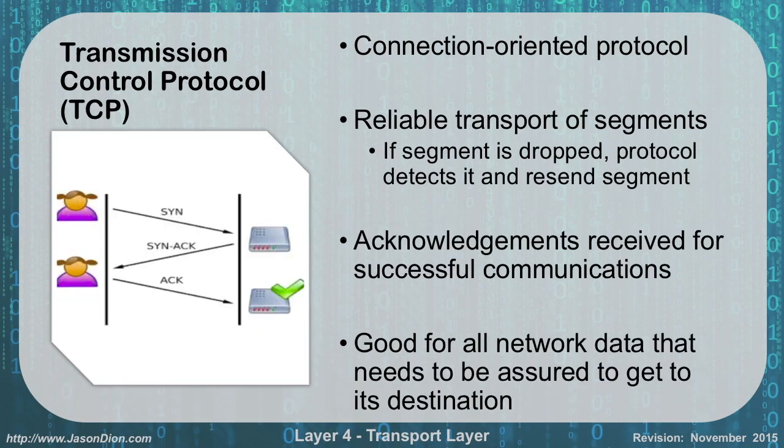Transmission Control Protocol, or TCP, is a connection-oriented protocol. It provides reliable transportation of segments. If a segment is dropped, the protocol detects this and resends it as a retransmission. Acknowledgements are received for successful communications, and any failures are asked to be retransmitted. This is good for all of our network data that needs to be assured to get to its destination.